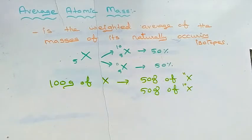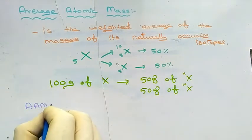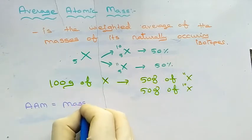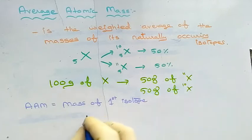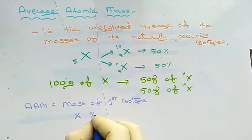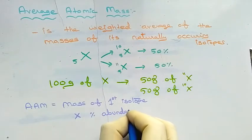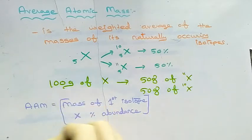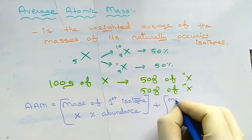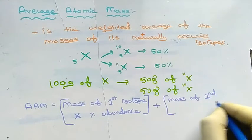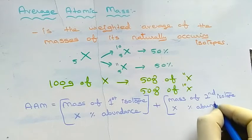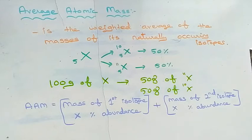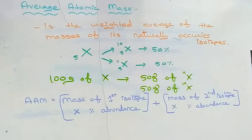Now we are going to see how to calculate the average atomic mass for element X. Average atomic mass can be calculated using this formula: the mass of the first isotope should be multiplied with the percentage abundance of that isotope, and this should be added with the mass of the second isotope into the percentage abundance of that second isotope.